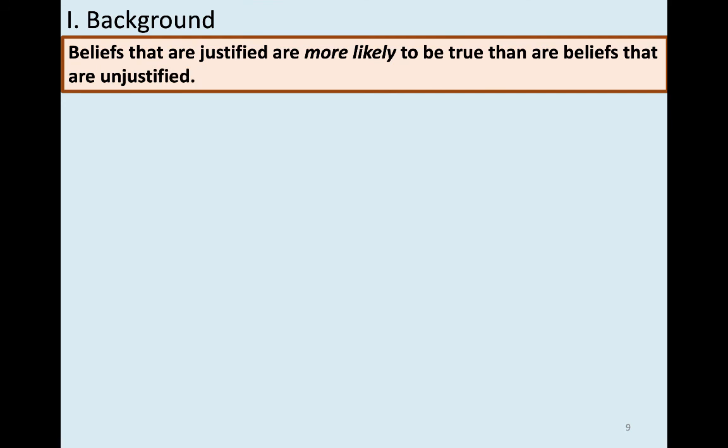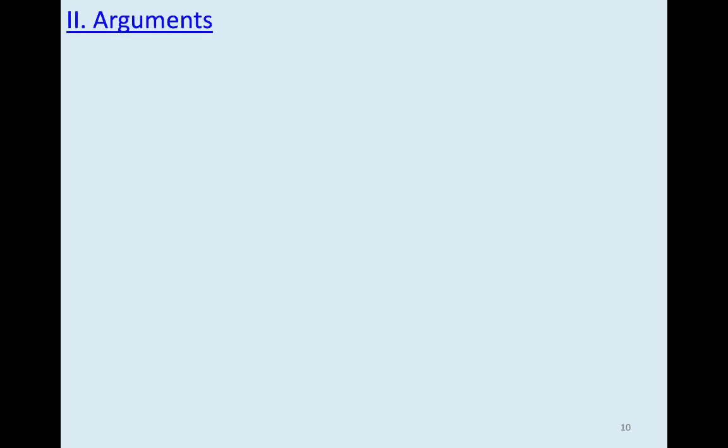So why do we care about justification? Why care about having good reason if justified beliefs can be false and unjustified beliefs can be true? The reason is simple: beliefs that are justified are more likely to be true than beliefs that are unjustified. Having a justified belief raises the probability that it's true — and that's the best we can do. We can aim to raise the probability that our beliefs are true.